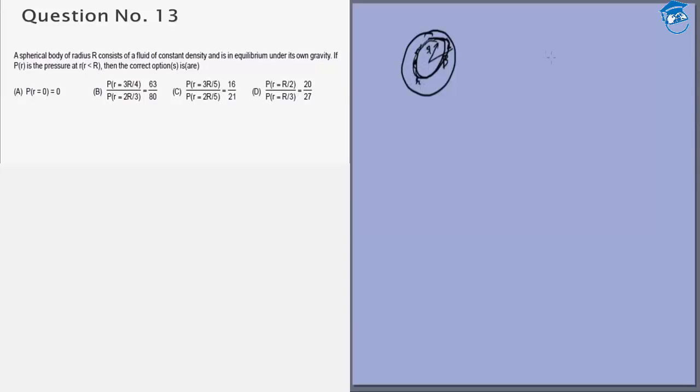So we know that pressure due to gravity is exerted in the direction of gravity inside. So we know that the pressure must be maximum at the center. If you take a small spherical shell of radius r and thickness dr, then the pressure outside would be p and the pressure inside would be greater, it would be p plus dp.